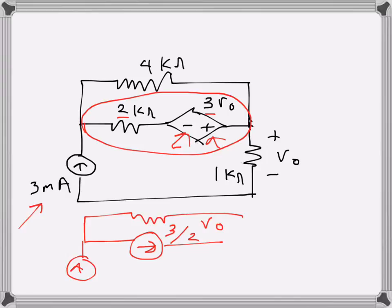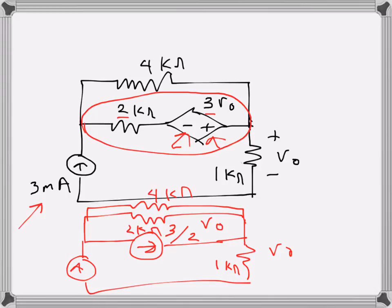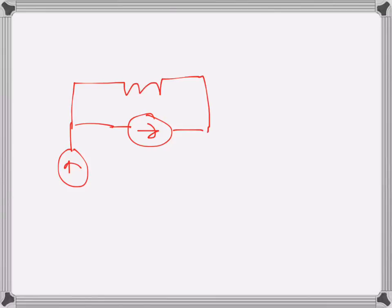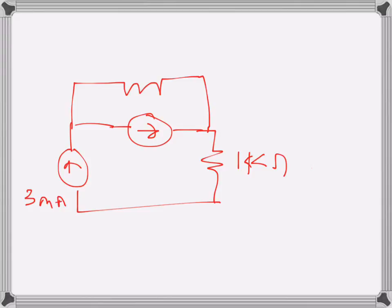I will have 2 kilo ohms there, and it's a bit clumsy here, so that will be 4 kilo ohms there. This one is V0 which is 1 kilo ohm. So I actually have 4 kilo ohms and 2 kilo ohms in parallel. In the next part I will just draw this with the current source and the 4 and 2 kilo ohm parallel combination, plus 1 kilo ohm and 3 milliamps.